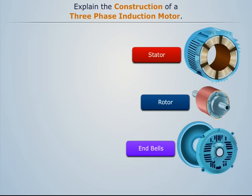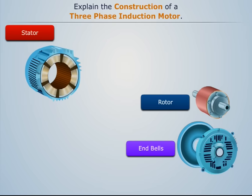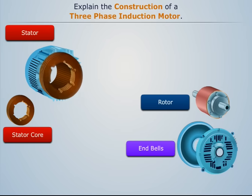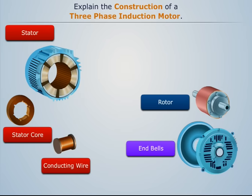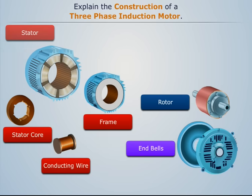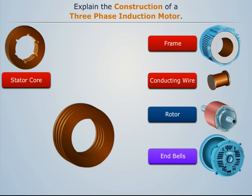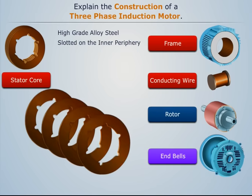The stator is the stationary part of a motor and it consists of a core, a conducting wire, and a frame. The stator core is made up of high-grade alloy steel rings which are slotted on the inner periphery. These rings are insulated from each other.